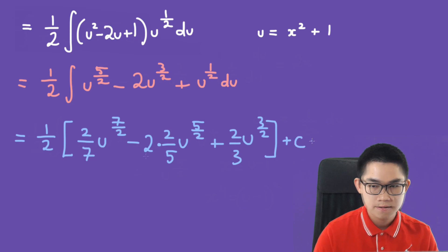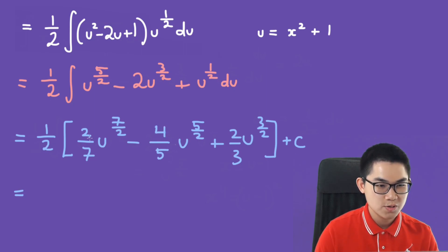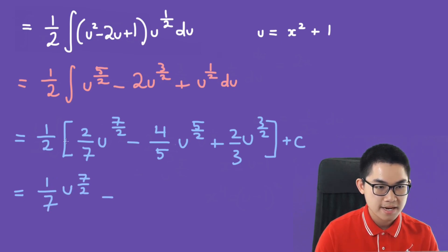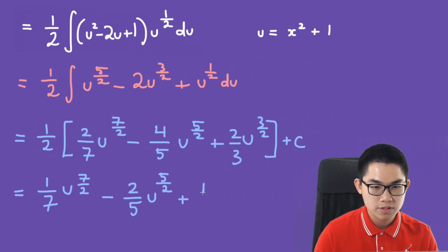Simplifying the coefficients: 1 over 2 times 2 over 7 is 1 over 7. And 2 times 2 over 5 is 4 over 5, so 1 over 2 times 4 over 5 is 2 over 5. And 1 over 2 times 2 over 3 is 1 over 3. So we have 1 over 7 times u to the 7 over 2, minus 2 over 5 times u to the 5 over 2, plus 1 over 3 times u to the 3 over 2, plus C.